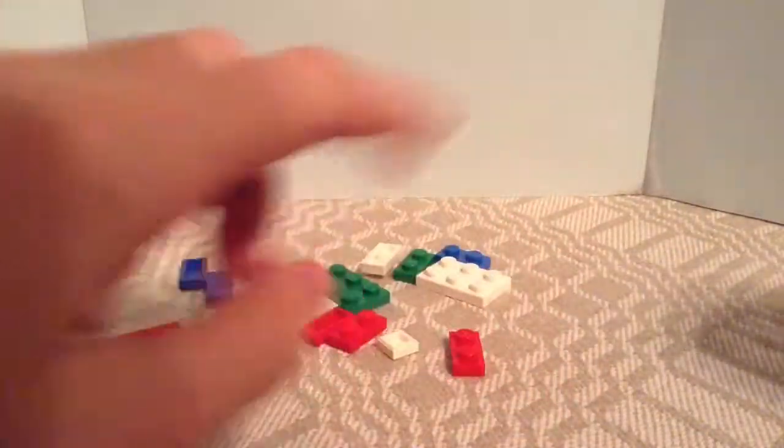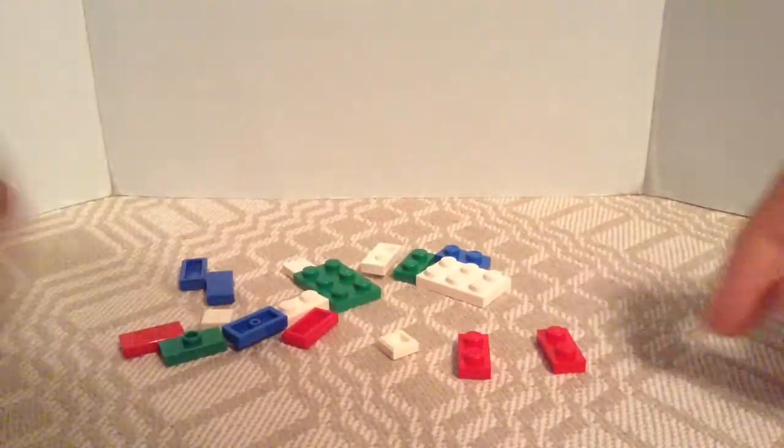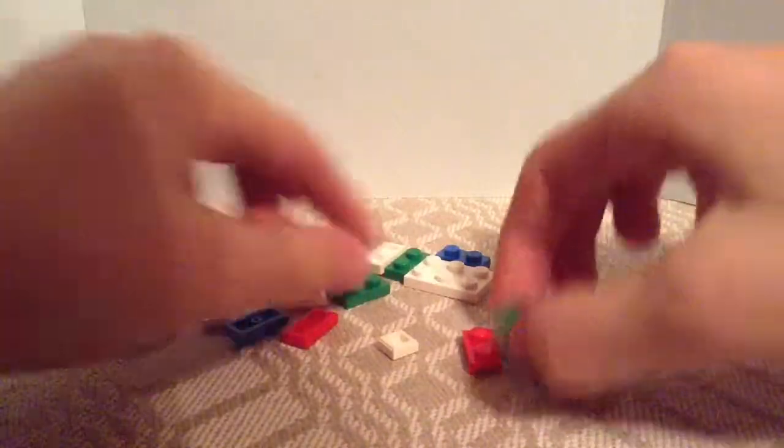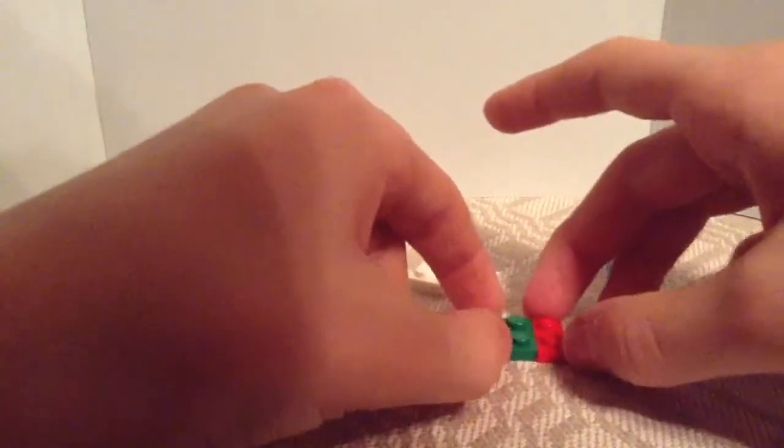So let's put them together. Let's take two 1x2 red pieces and put a green one in the middle, like this.